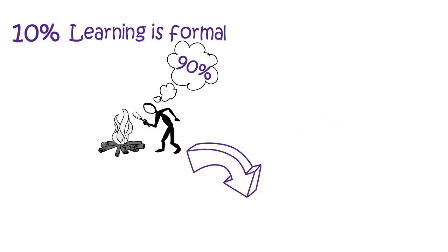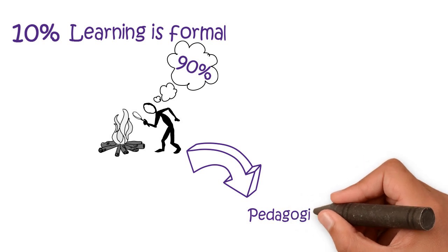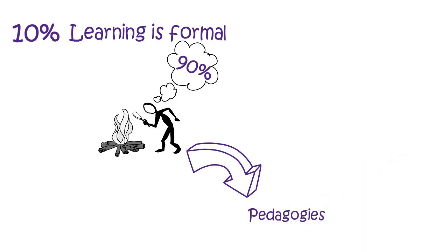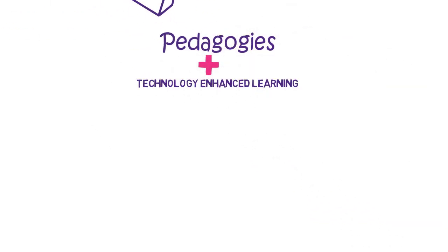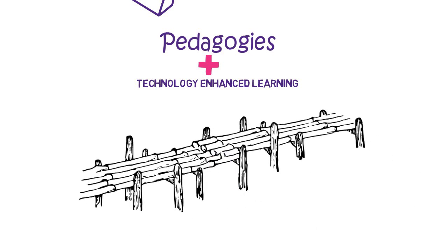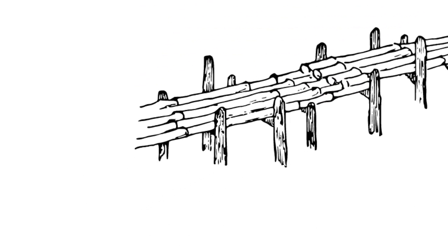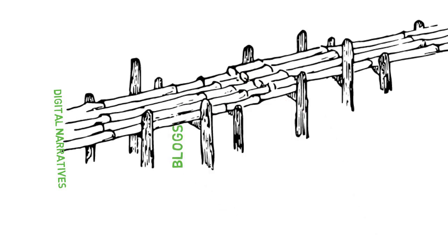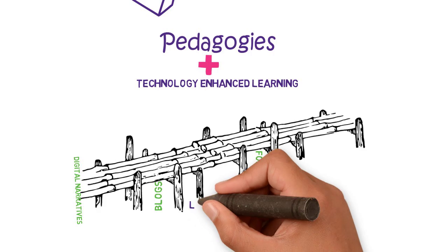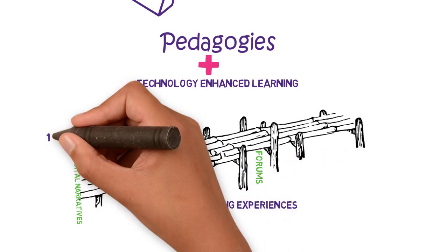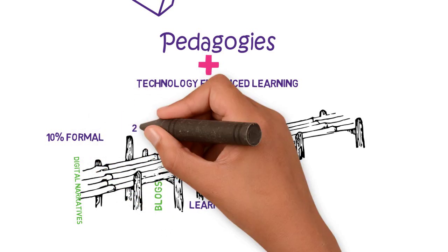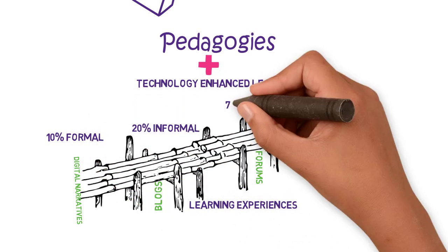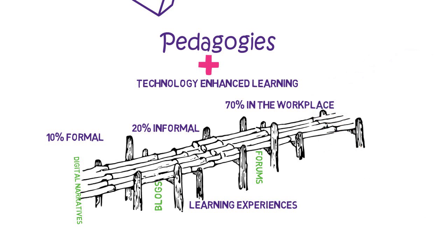One approach might be to first consider how theories of learning influence the pedagogies we use to design our formal learning programs. This will enable us to select the appropriate technology to support and scaffold desired learning activities. By using appropriate technology which is not confined to the training room, we can move closer to bridging the gap between formal, informal and workplace learning experiences.